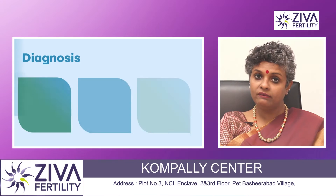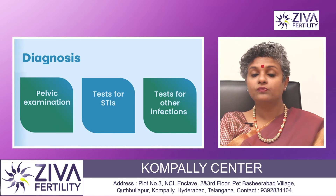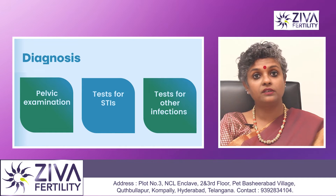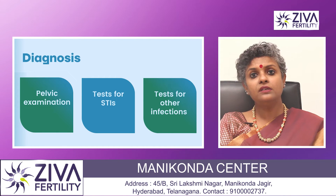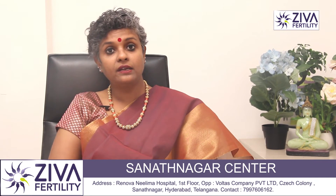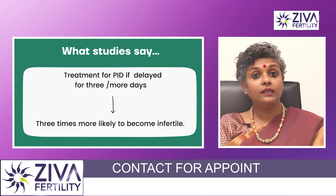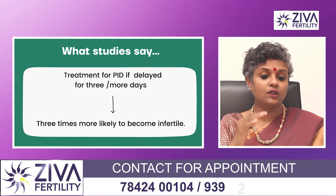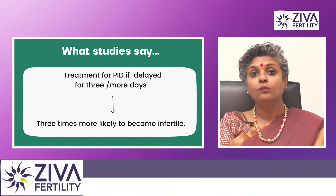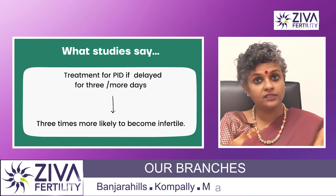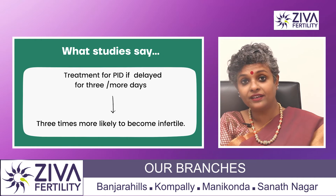How is it diagnosed? Through a pelvic examination, tests for sexually transmitted diseases, and tests for other bacterial infections. The risk of infertility grows when care for PID is delayed — studies have shown that when PID is left untreated for more than two to three days after onset, these women are three times more likely to become infertile, because by then the damage is done.